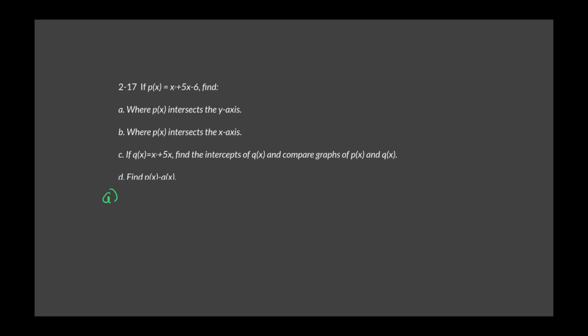I'm going to plug in and say P of 0 equals 0 squared plus 5 times 0. If you have a teacher like I was, they're going to say prove it. So this is proving it algebraically. When I get done with all of that work, my P of 0 equals negative 6. So my Y intercept is (0, negative 6).